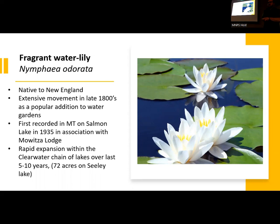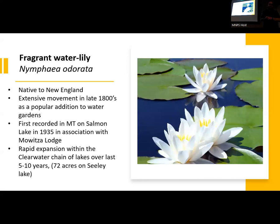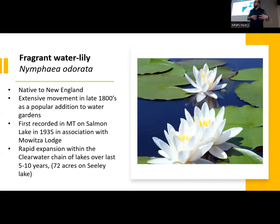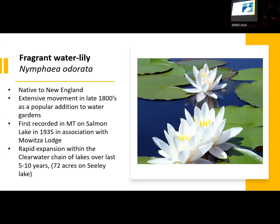If you know where Legendary Lodge is on Salmon Lake, that was once Mewitsa Lodge built by one of the Copper King families. Probably around the 1890s, someone within that family loved this plant and wanted it at their lodge on Salmon Lake. Because it's so beautiful and does so well in this system, and because of all the cabin and house holdings along that chain of lakes, we've seen rapid expansion along the Clearwater chain — including around 72 acres of Seeley Lake being infested with Fragrant Water Lily.